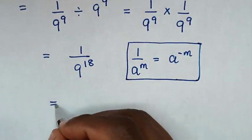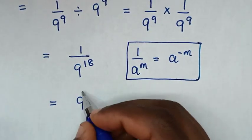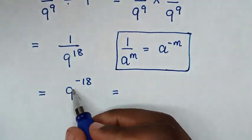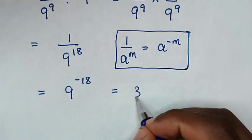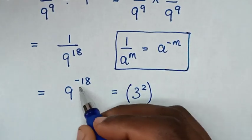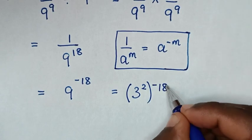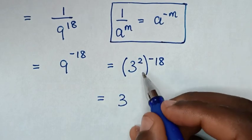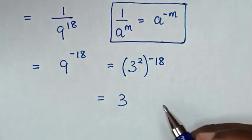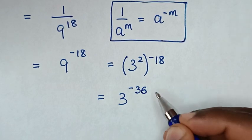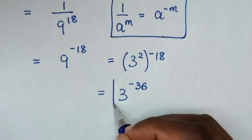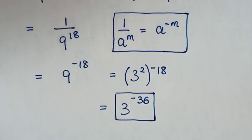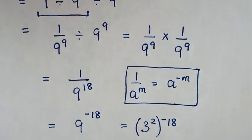So it will be equal to 9 power negative 18. Since 9 is the same as 3 squared, we have 3 squared to the power negative 18, which equals 3 power 2 times negative 18, which is 3 power negative 36. Therefore, 3 power negative 36 is our final answer. Thank you. See you in the next video. Bye-bye.